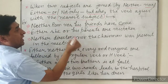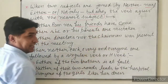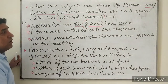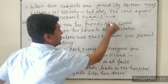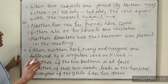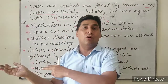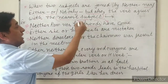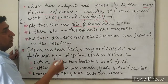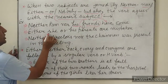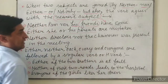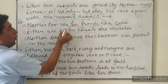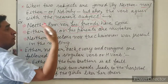देखो कि 'nor' के बाद जोड़ा गया word क्या है — 'friends' है, जो plural है। तो जो verb या helping verb लगानी है वो 'friends' के according होनी चाहिए। पहले वाले rule में पहले subject के according verb लगाना था, लेकिन अब 'or' या 'nor' के बाद वाले subject के according लगानी है। Next example: 'Either she or his parents' — verb किसके according लगेगी? 'Parents' के according, क्योंकि वो nearest subject है।